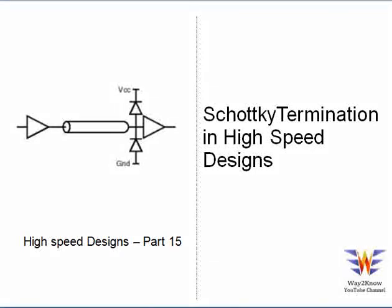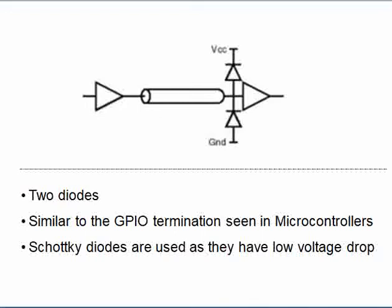In this video we will talk about Schottky diode termination, which is also called diode termination. In previous videos we covered series termination, parallel termination, and AC termination. As the name suggests, Schottky termination is based on Schottky diodes — there are two diodes placed on the transmission line, where one diode is connected to VCC and the other is connected to ground.